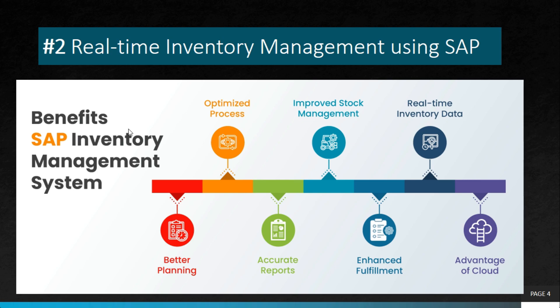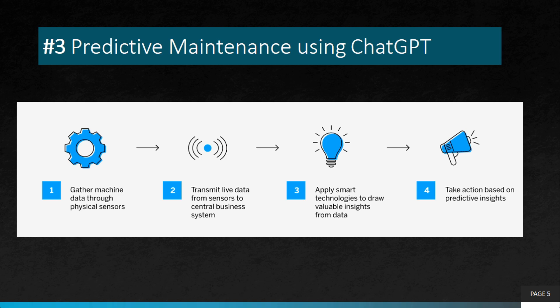The third project is predictive maintenance using ChatGPT. This project aims to train a ChatGPT model to predict equipment failures and maintenance requirements. The model can identify patterns that indicate impending equipment failures by analyzing historical data and using machine learning algorithms. This can help businesses reduce downtime, increase equipment reliability, and save on maintenance costs.